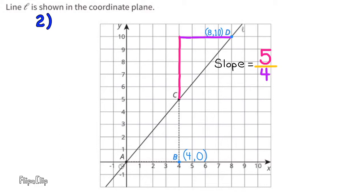Well, we know that this line has a slope of 5 fourths. Because we can rise up from point C, 5 units, and move to the right to point D, 4 units. That shows a slope of 5 fourths.